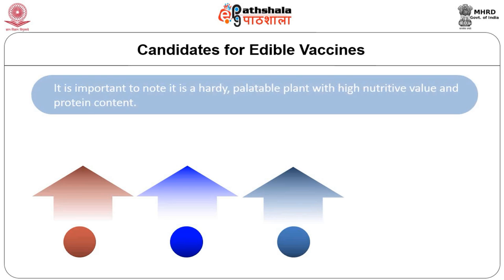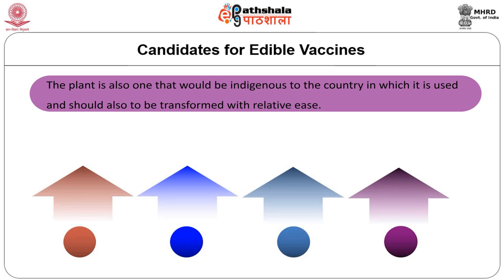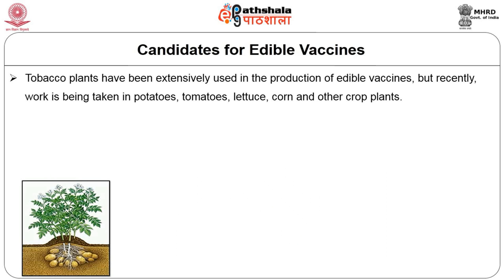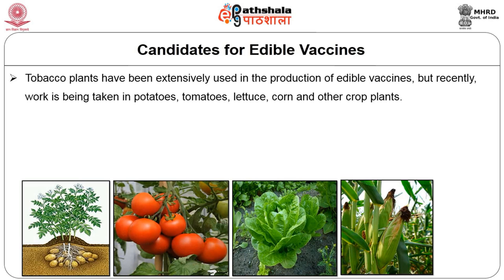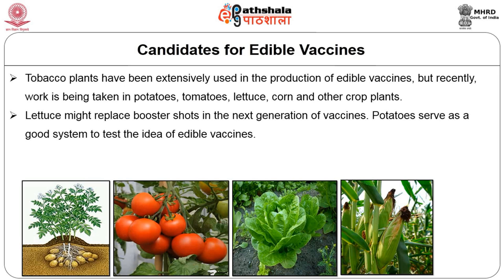The plant should also be indigenous to the country in which it is used and should be transformable with relative ease. Tobacco plants have been extensively used in the production of edible vaccines, but recently work is being done with potatoes, tomatoes, lettuce, corn and other crop plants.